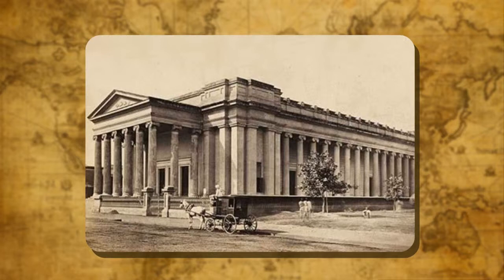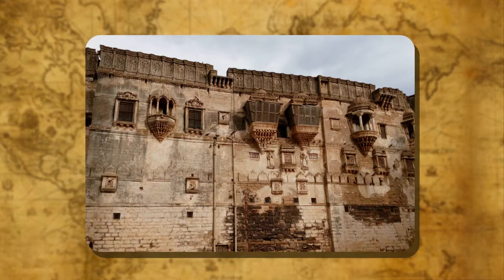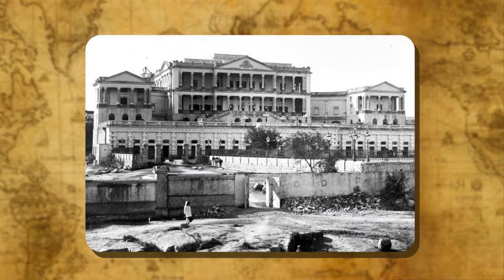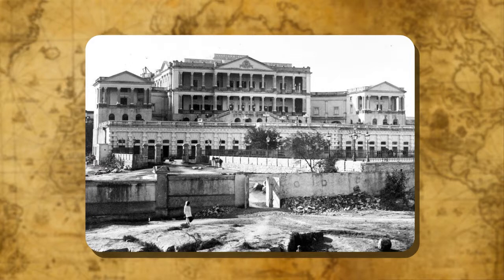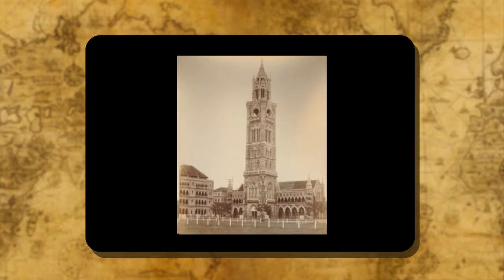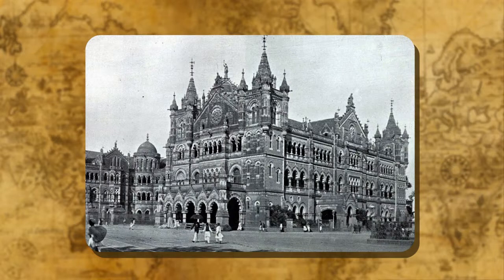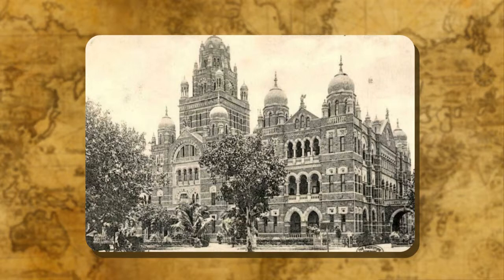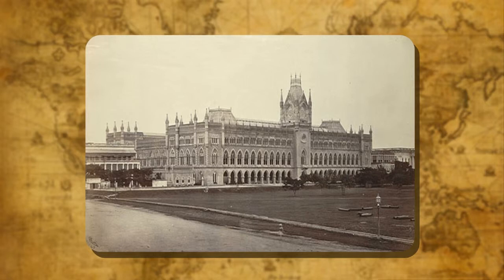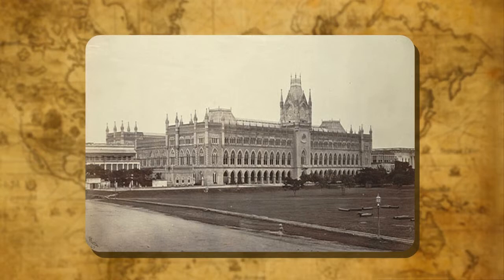Similar features characterise many princely residences of the era, such as the Aina Mahal at Murshidabad (1829–37) and the Falaknuma Palace outside Hyderabad (1872). The new Gothic style also proved serviceable for British civic monuments — the Convocation Hall and Rajabai Tower of Bombay University (1869–74), High Court (1869), Victoria Terminus (1888), and the Railway Offices (1894). Neo-Gothic buildings are also found in Queen's College in Varanasi (1847) and High Court in Calcutta (1864–72).